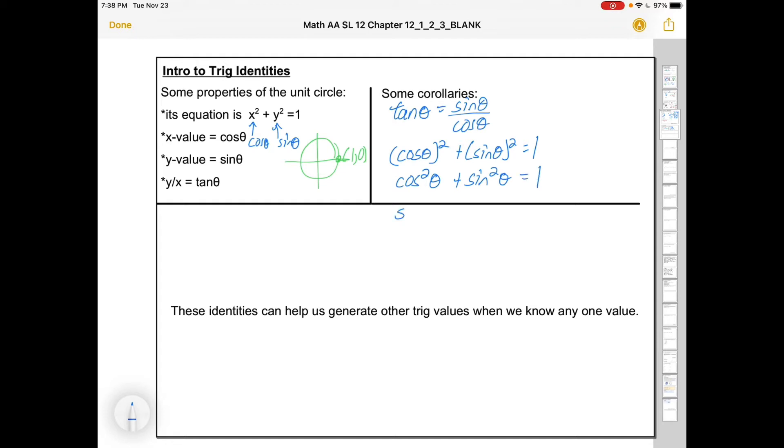And often this is written the other way around, as sine squared plus cos squared. It doesn't matter what order you put them in. And it can also be rearranged so that sine squared theta can be written as one minus cos squared theta.